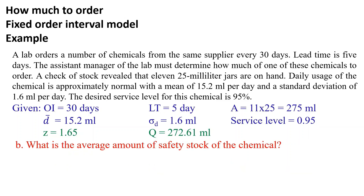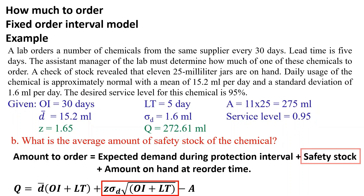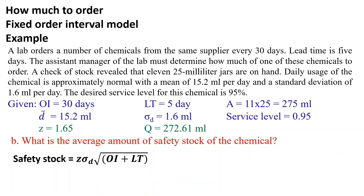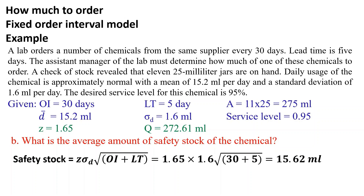For the second question — what is the average amount of safety stock of the chemical? — referring to the amount-to-order equation, it is clear that the safety stock element is: Safety stock = Z × σD × √(OI + LT). Substituting the given data results in 15.62 mL. So, the average amount of safety stock of the chemical is 15.62 mL.